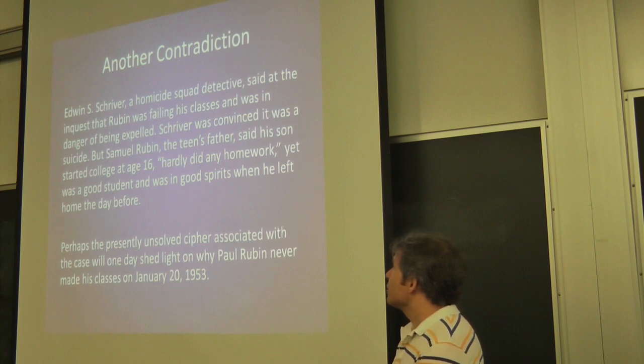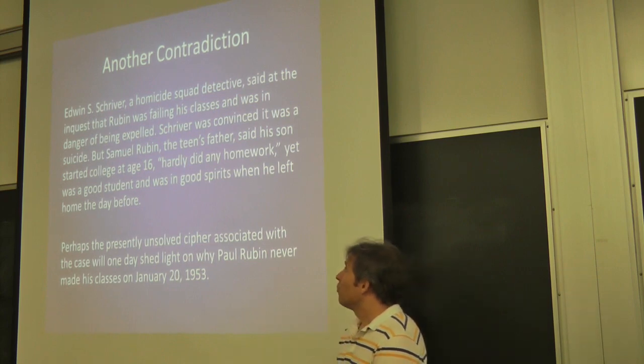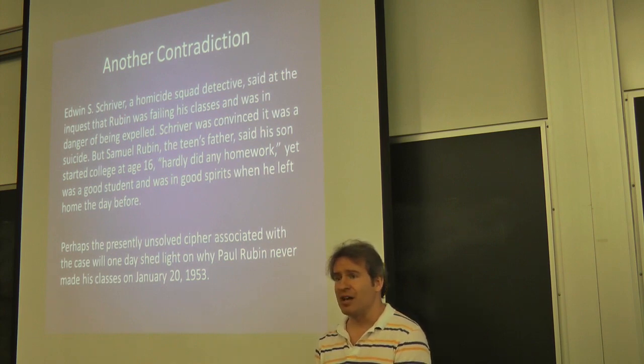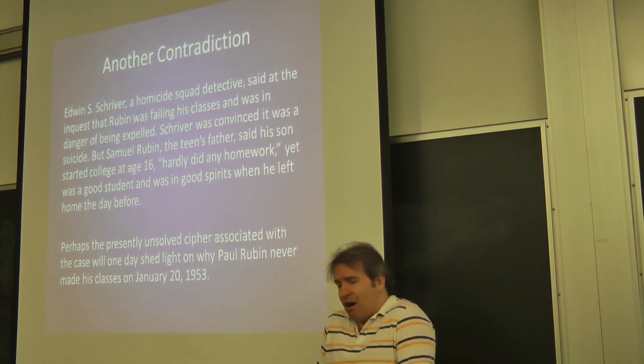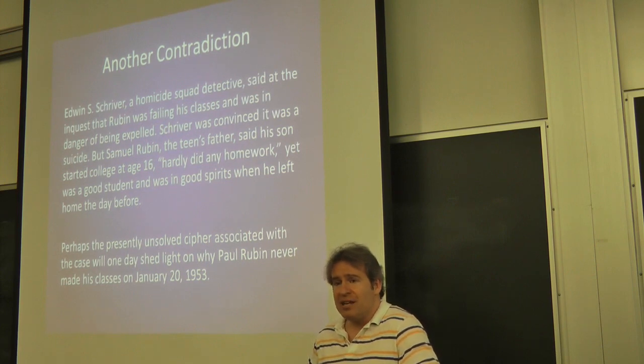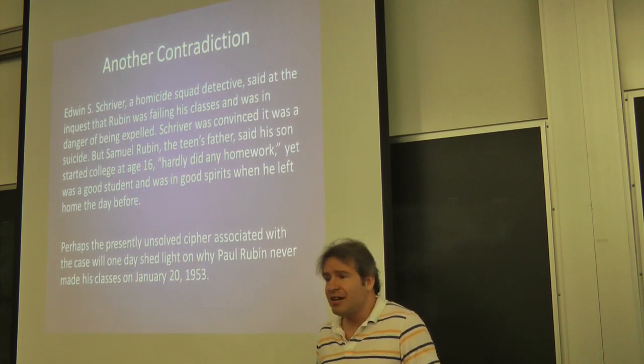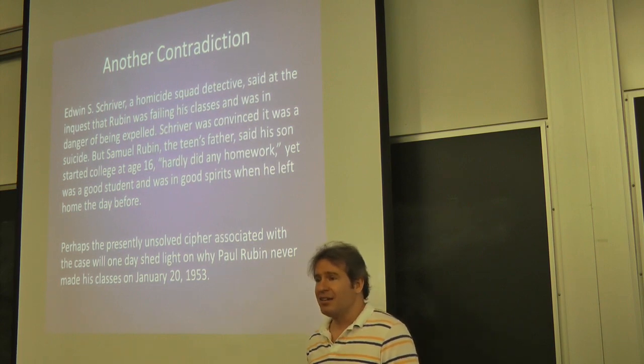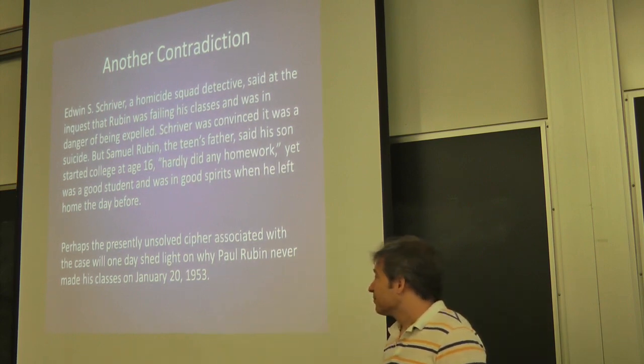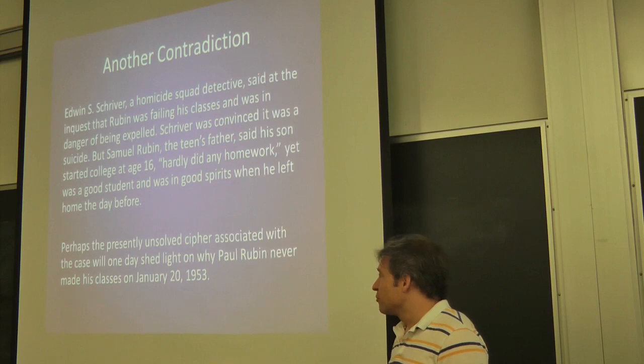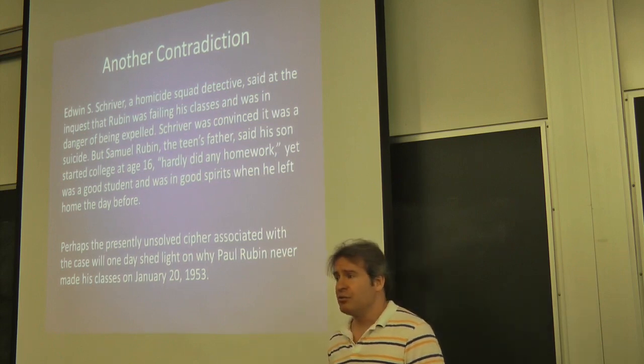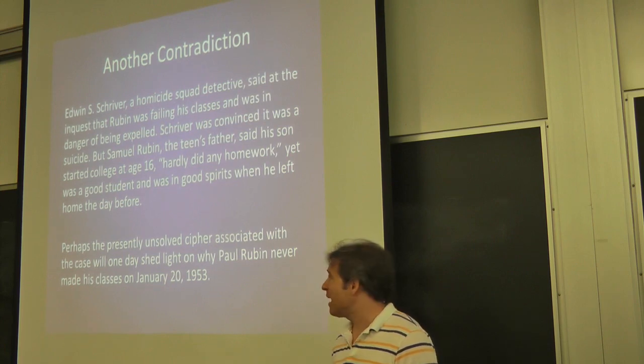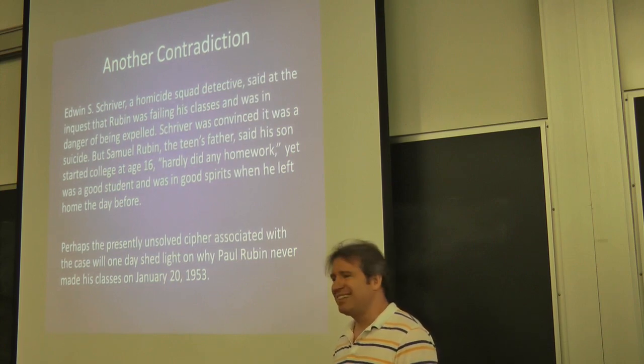More contradictions. A homicide squad detective said that Rubin was failing his classes, and that's why he committed suicide. His dad says, no, no. He started college when he was 16. He got great grades without even studying. He was happy that day. A lot of times, parents would naturally be reluctant to admit that a son committed suicide. You want to live in denial and not imagine that it could have been that bad.